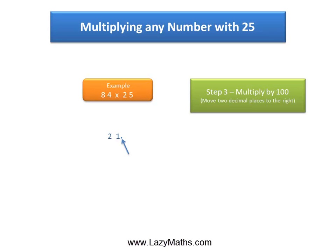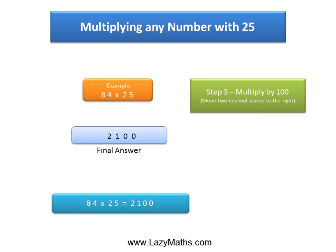So the last step is to simply multiply this number 21 with 100, or in other words move the decimal two places to the right, and we get 2100 as our answer. So 84 times 25 equals 2100.